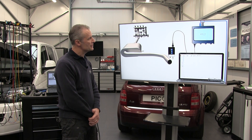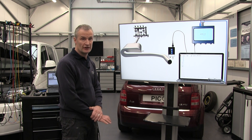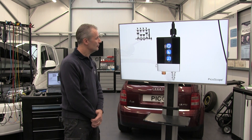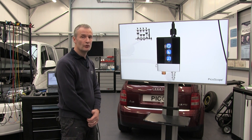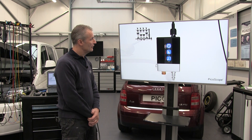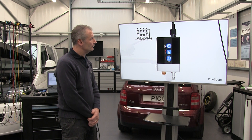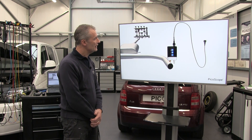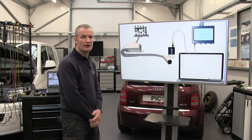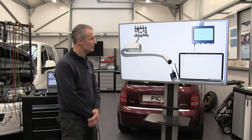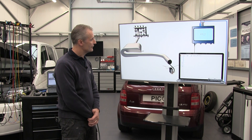Switch on the pressure transducer and allow it to calibrate — make sure the test port is open to atmosphere. We calibrate on all three ranges, and for this test we are going to want range three and zoom one, because we can zoom using the transducer.